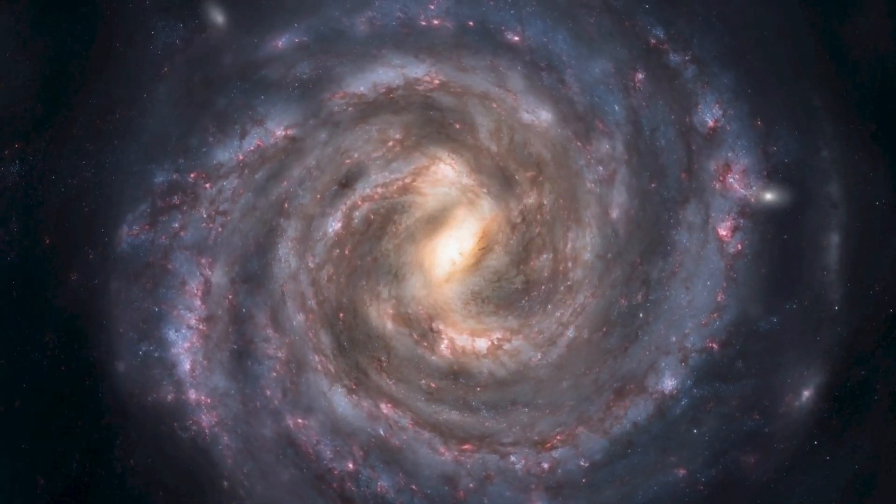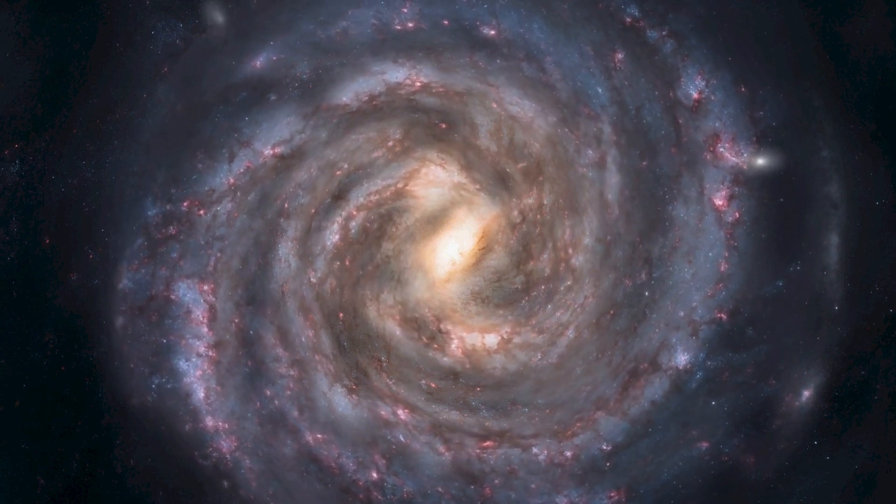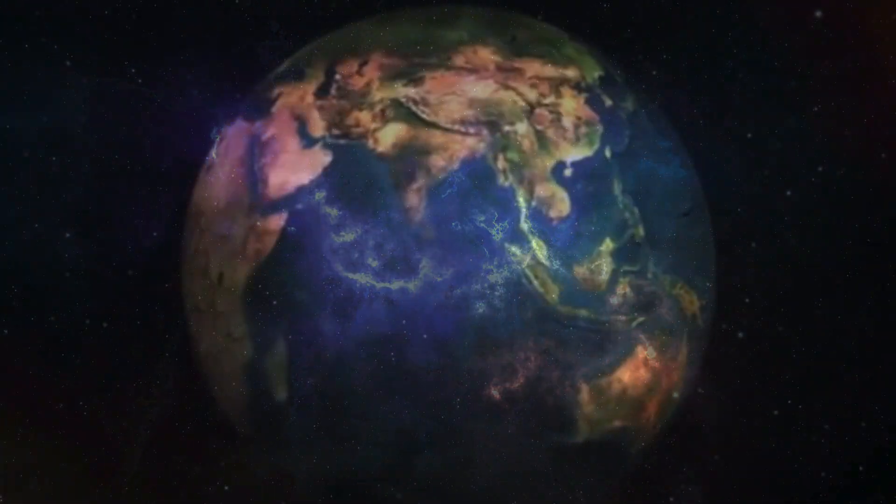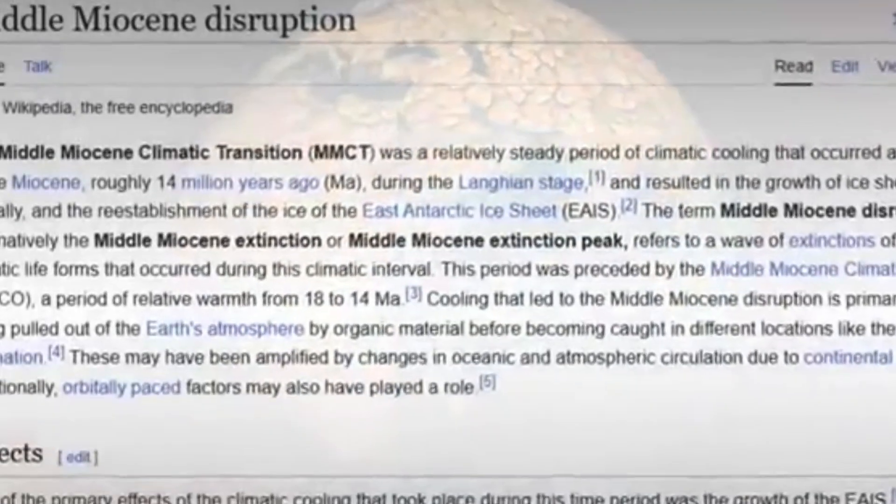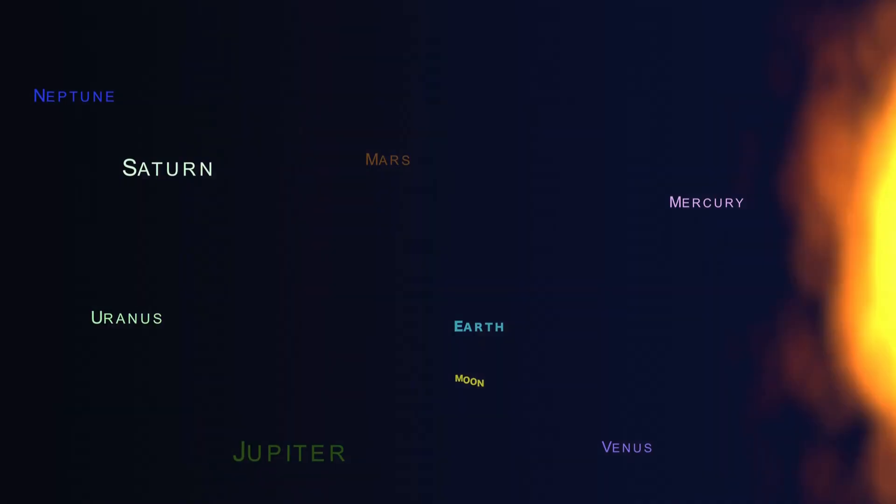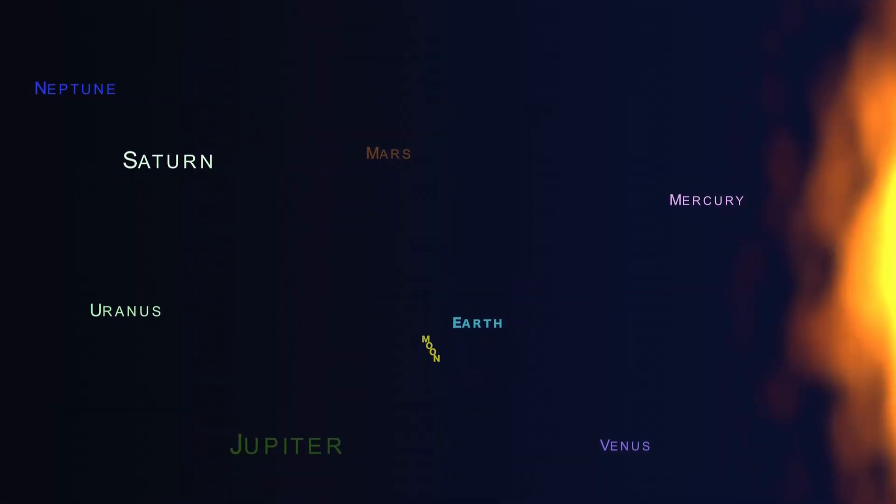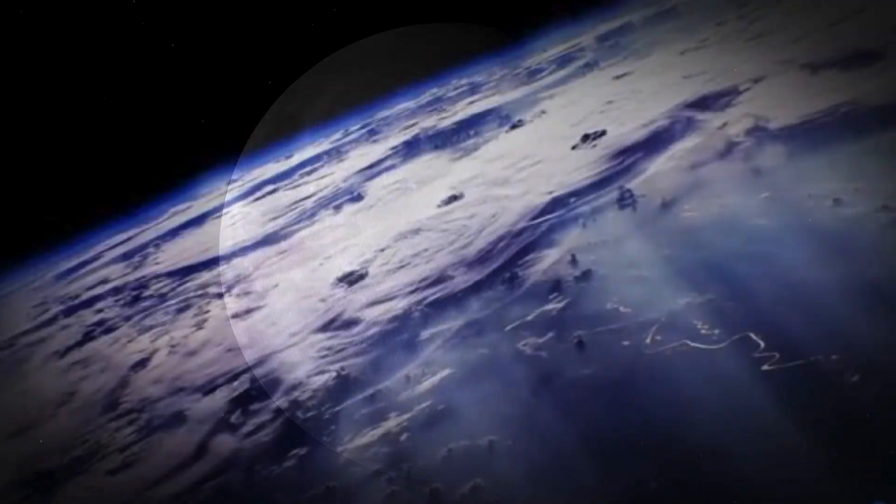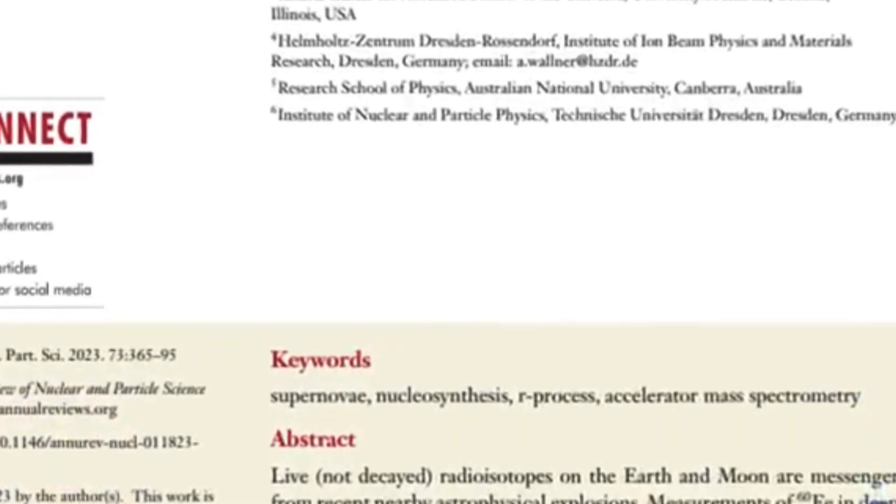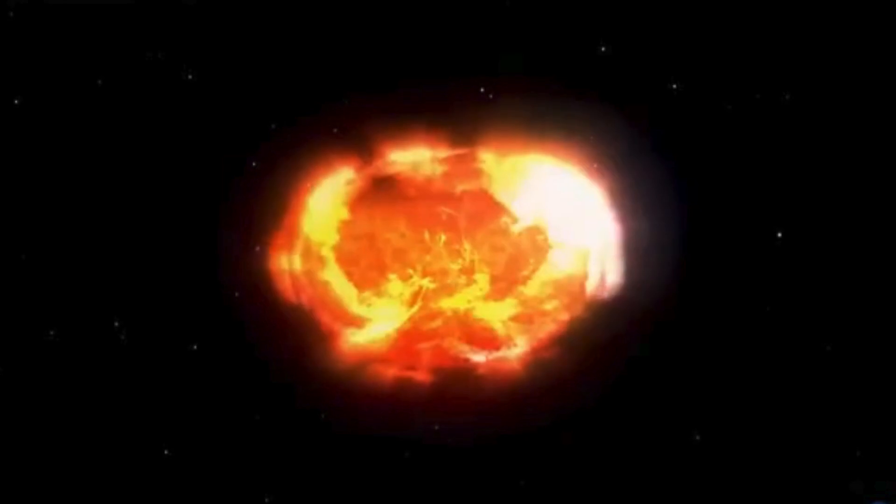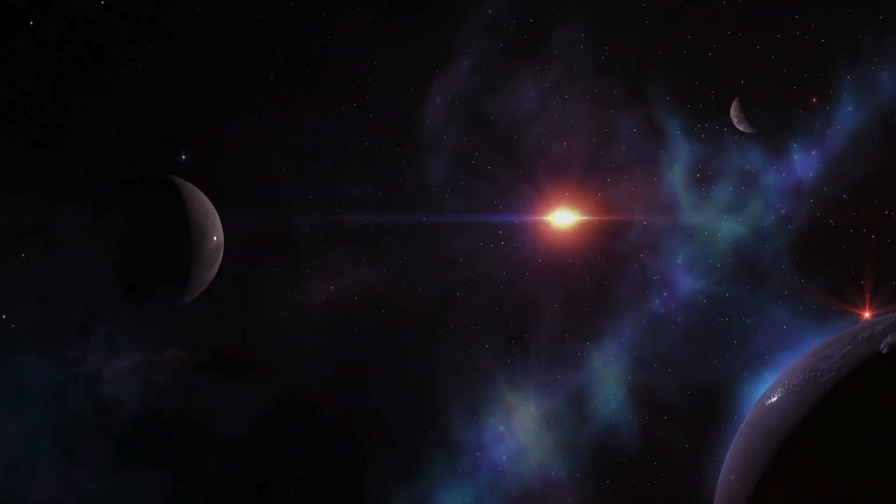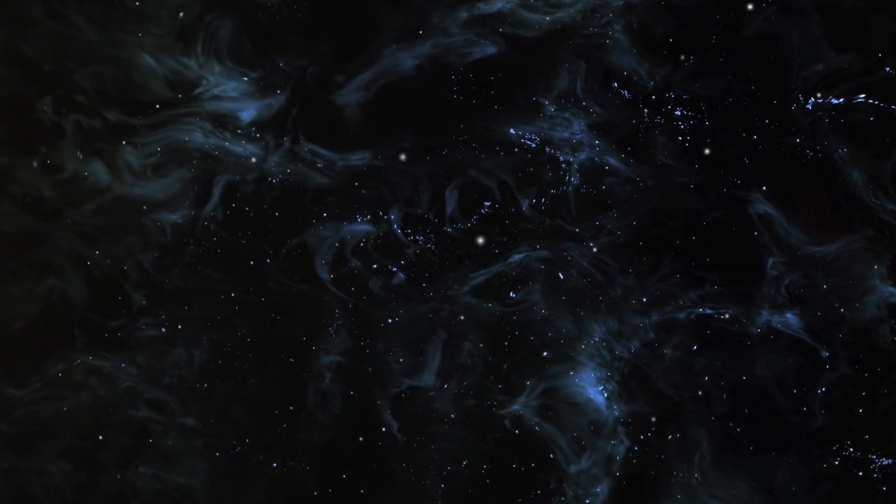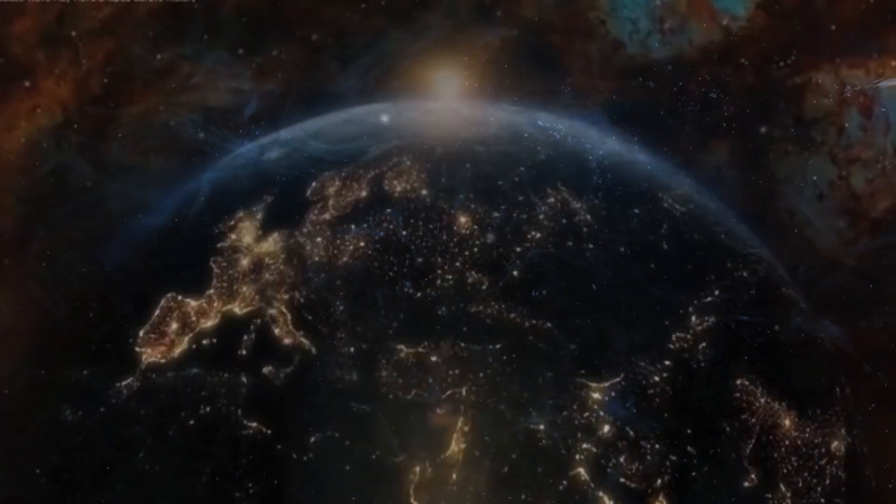What this means for exoplanets and habitability. This discovery doesn't just reshape how we see Earth's history. It also has implications for the search for life beyond our solar system. If cosmic structures like the Radcliffe wave can influence planetary climates and evolutionary processes, similar effects may be happening in other star systems. Many exoplanets orbit stars that, like our Sun, move through different regions of the galaxy.